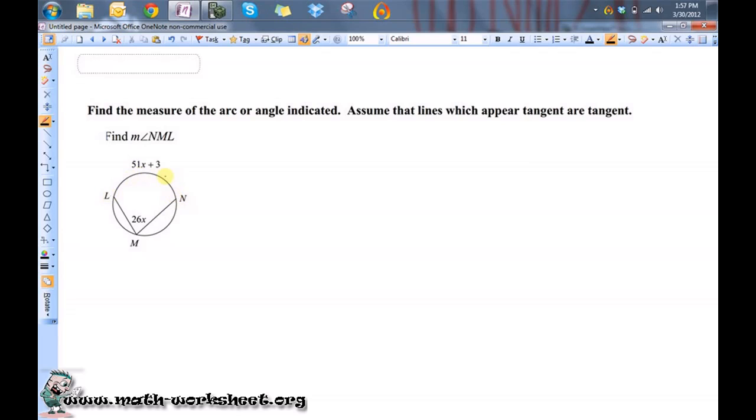So it's equal to one half the measure of LN. So the measure of angle NML is equal to one half the measure of arc LN.